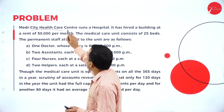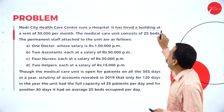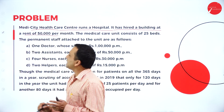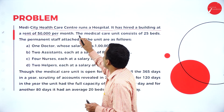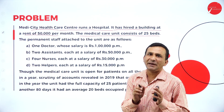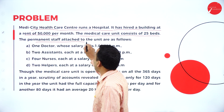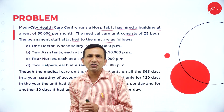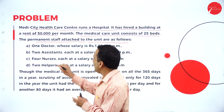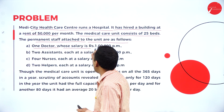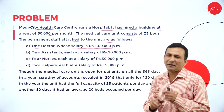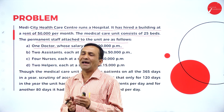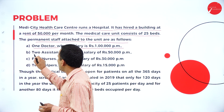There is one question for hospital costing: Medi City Health Care Center, Rane Hospital. It has a hired building — hired building means rent must be paid — so the rent is 50,000 per month. The permanent staff attached to the unit include one doctor whose salary is 1 lakh per month. Since we are calculating operating costs for one year, we multiply by 12.